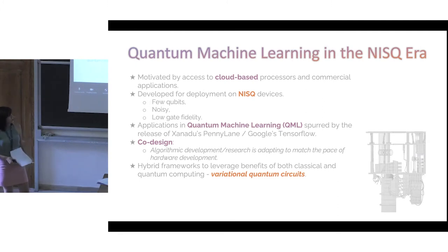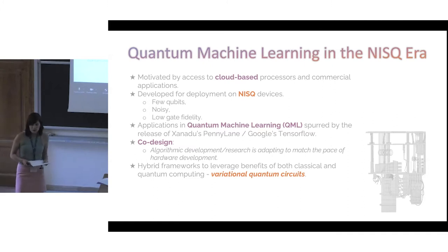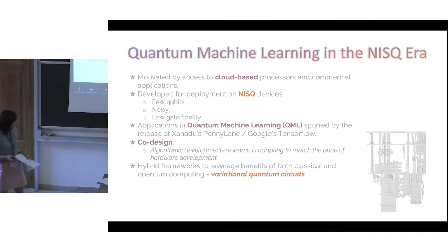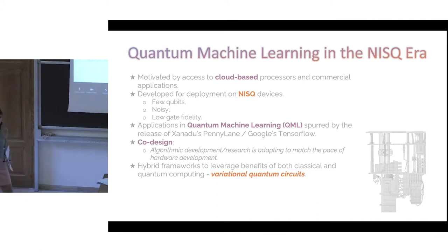So when we say quantum models today, what are we actually referring to? We are in the NISQ era of quantum computing. Most practical applications studied these days are developed for deployment on NISQ devices, which we expect to have a few qubits, be noisy, and have low gate fidelity. There's also been a lot of development on QML-specific tools such as PennyLane or Google's TensorFlow Quantum, which allow us to bridge quantum and classical ML and leverage familiar tools like Keras and TensorFlow in a hybrid setting.